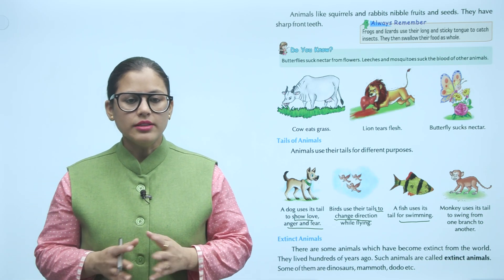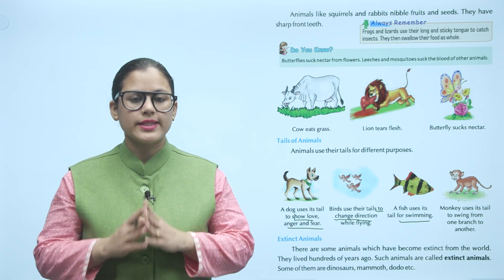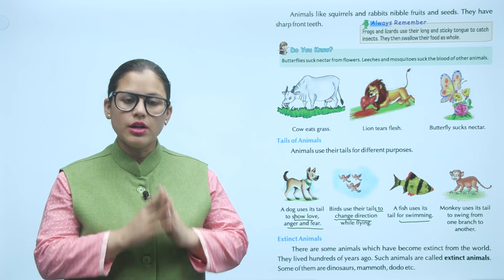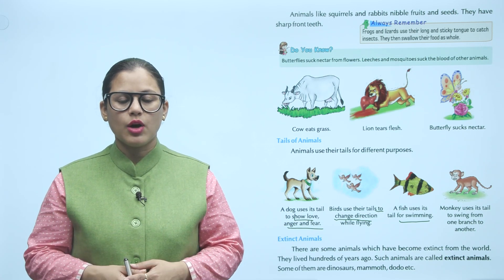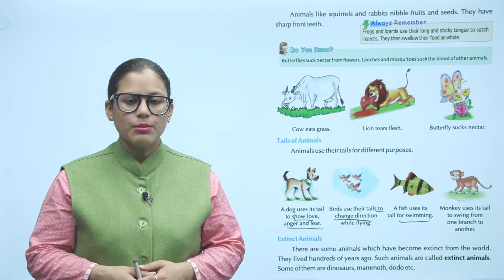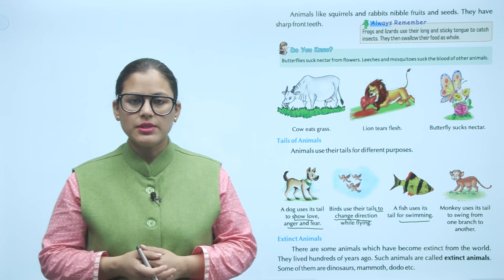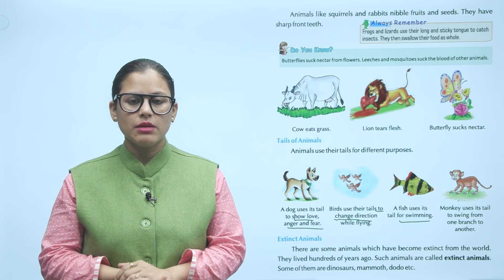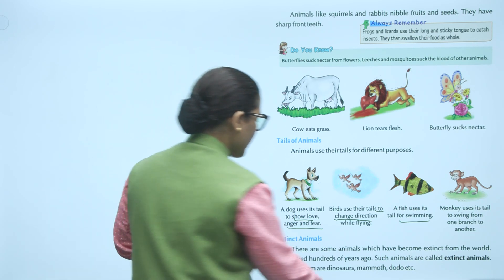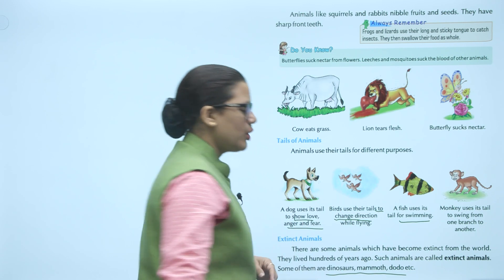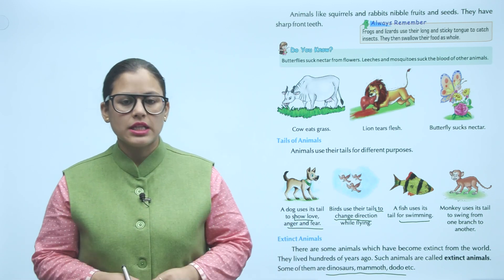Extinct animals. There are some animals which have become extinct from the world. They lived hundreds of years ago. Such animals are called extinct animals. Some of them are dinosaurs, mammoth, dodo, etc.